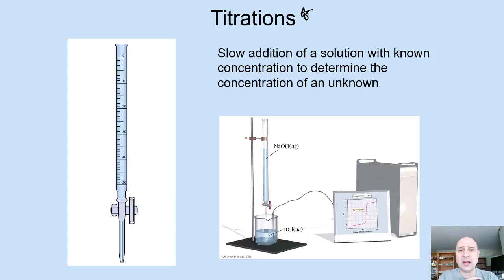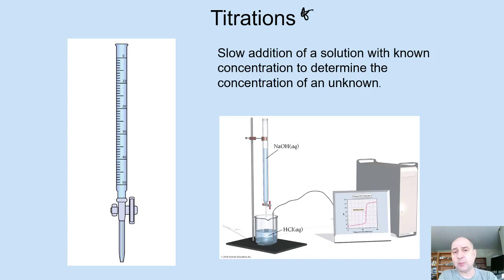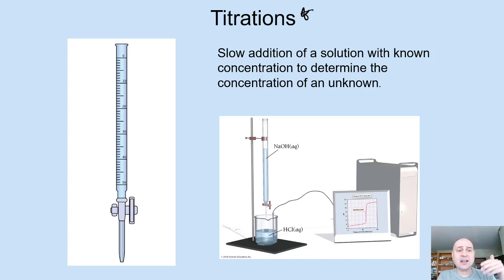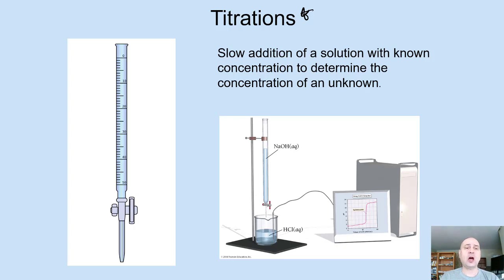In general, titrations involve adding a solution of known concentration to something of unknown concentration slowly, monitoring the reaction, and then determining the unknown concentration. In general chemistry 1 we did a redox titration of iron — we added permanganate, a deep purple oxidizing agent, slowly to an iron(II)-containing compound, which we were oxidizing to iron(III). As you added the purple solution, it would disappear and turn clear, but at the point where all the iron was consumed, the solution turned pink and you stopped.